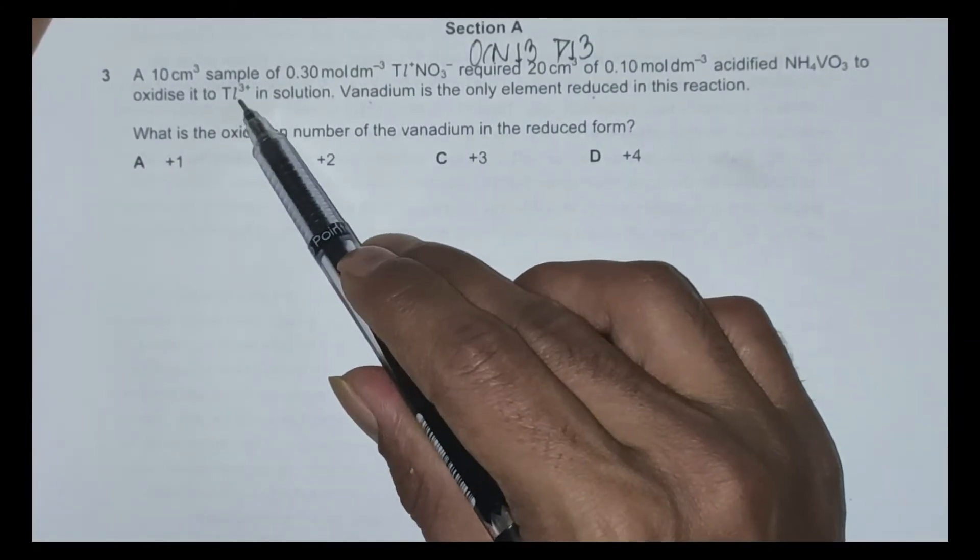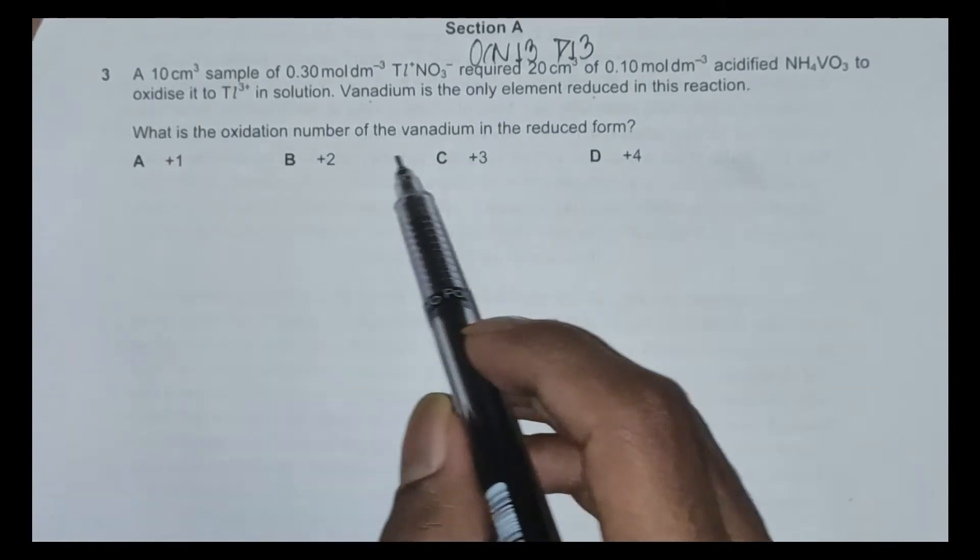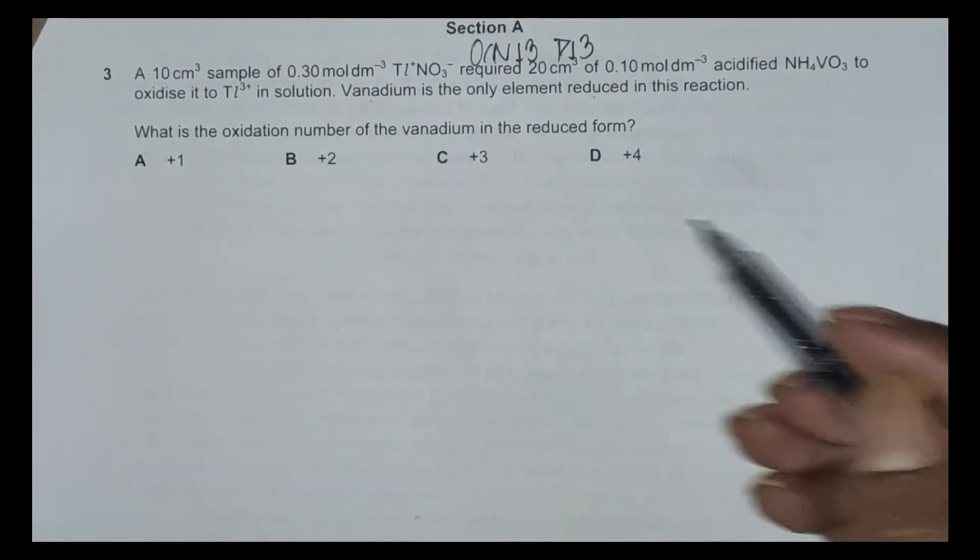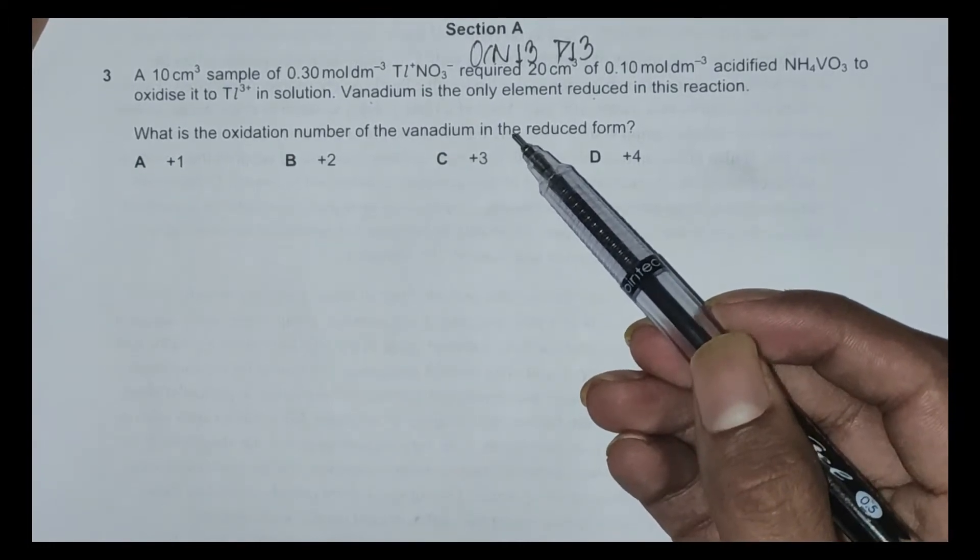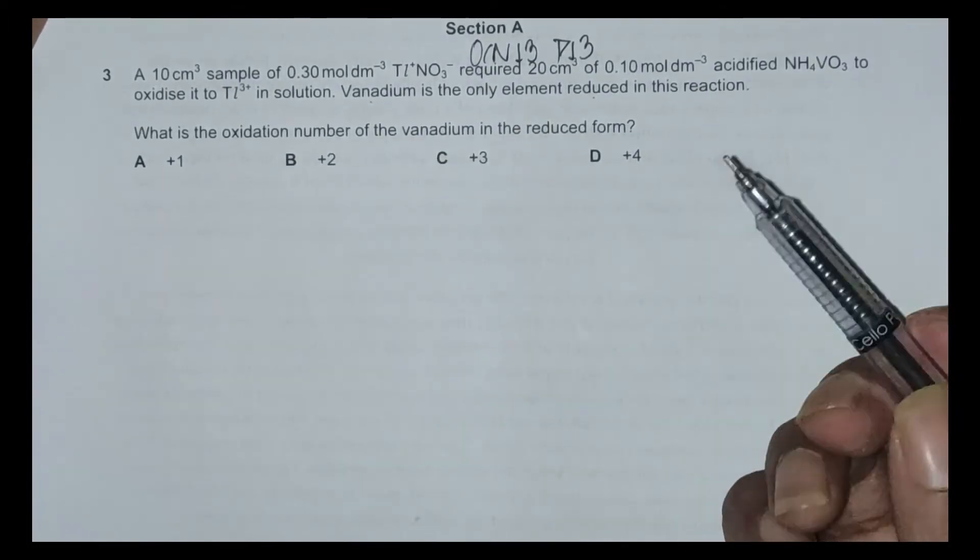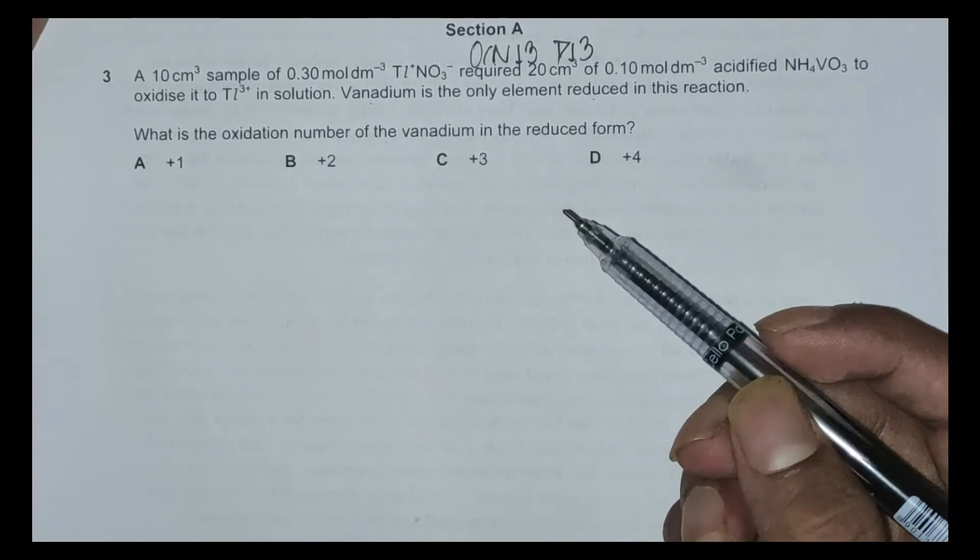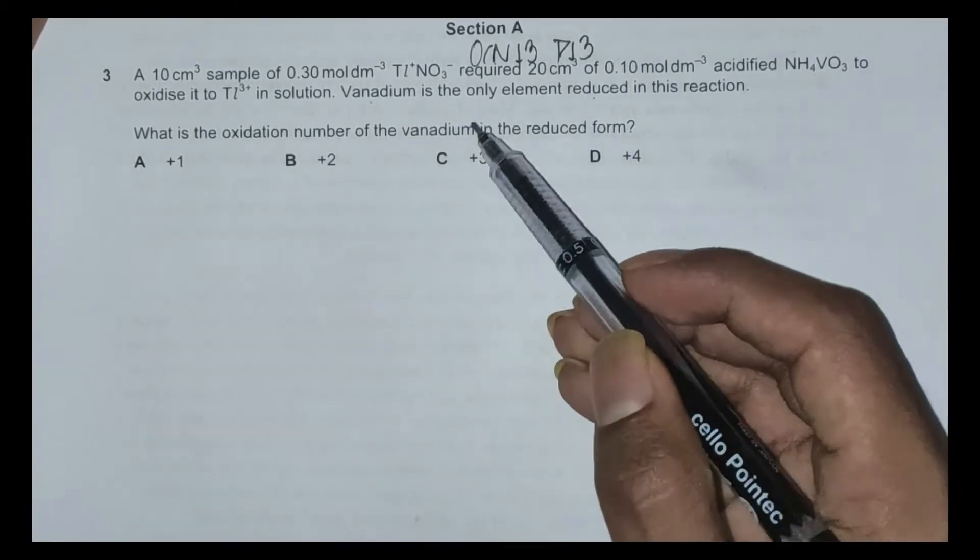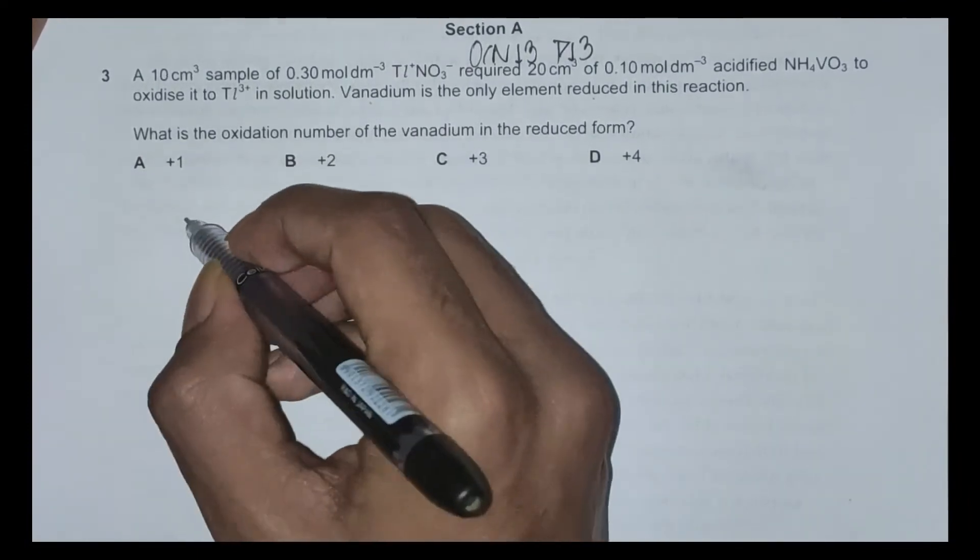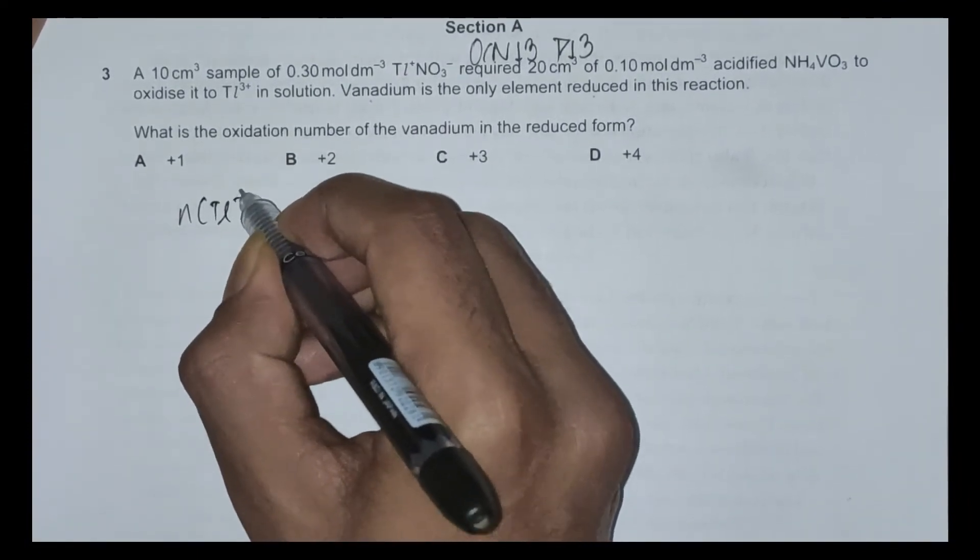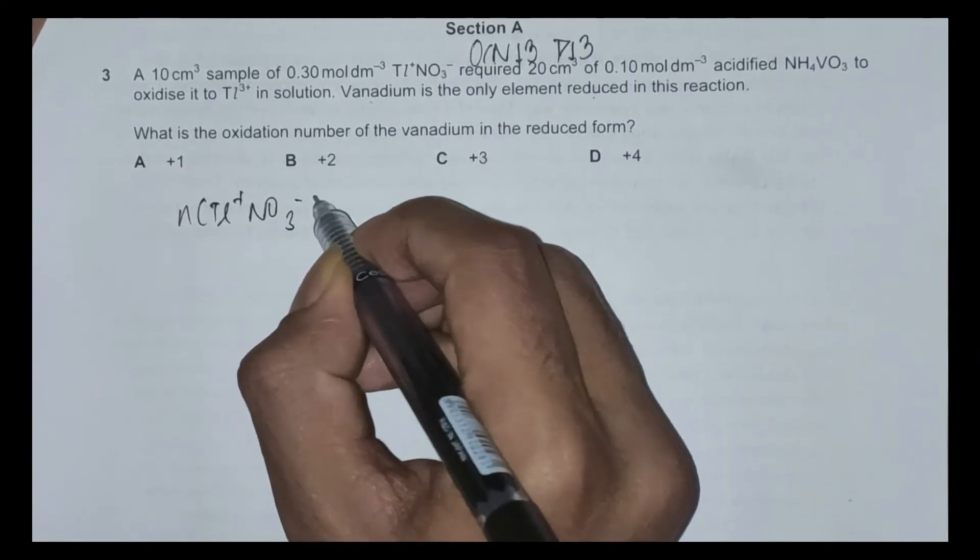What is the oxidation number of vanadium in the reduced form? Now there are two different methods to solve this question, but we are going to approach this by the most optimal or efficient way. First, using the information we have been given, we have moles of TL⁺NO₃⁻.